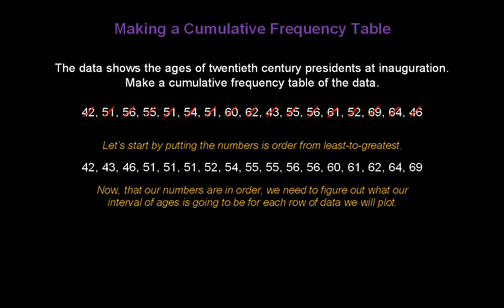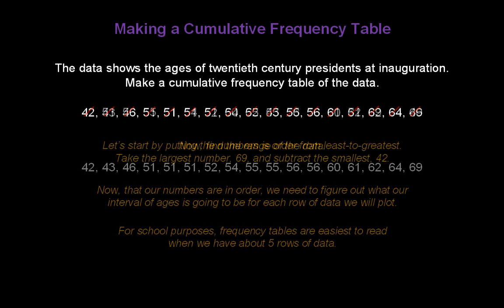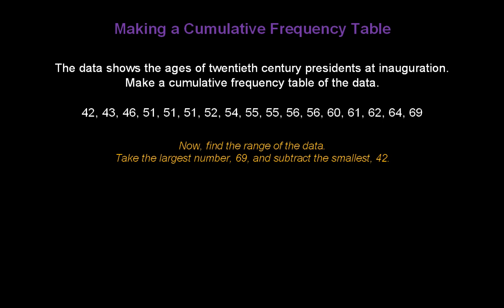Now that our numbers are in order, we need to figure out what our interval of ages is going to be for each row of data we plan to plot. And for school purposes, frequency tables and cumulative frequency tables are easiest to read when we have about five rows of data. So the first thing we need to do is find the range of the data. Remember, the range is always the largest number—in this case, it's 69—minus the smallest number, 42. We subtract those two, and we find out our range is 27.